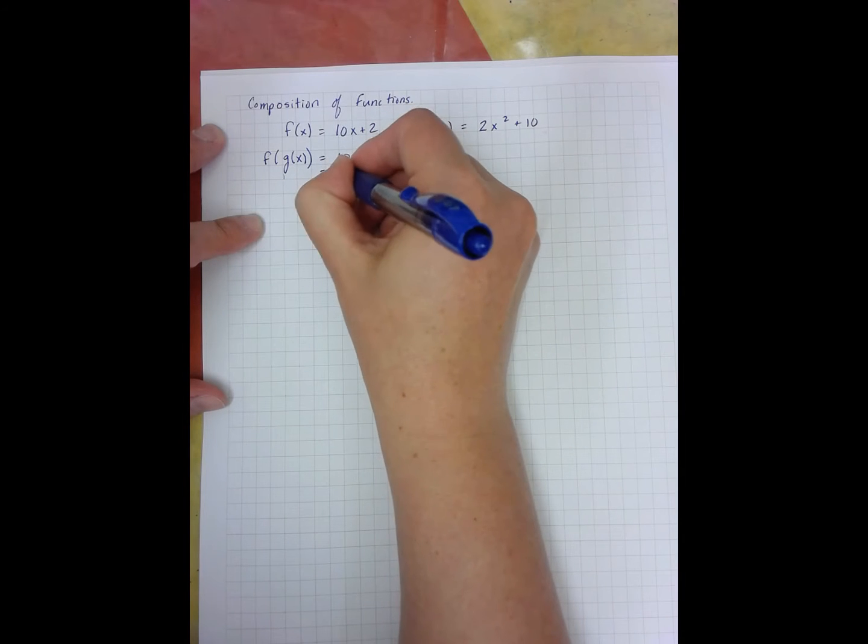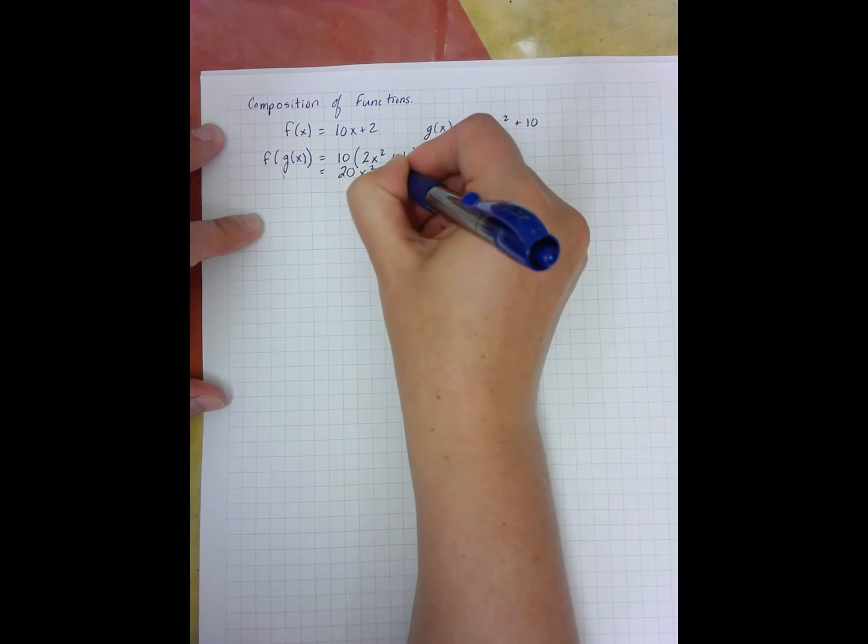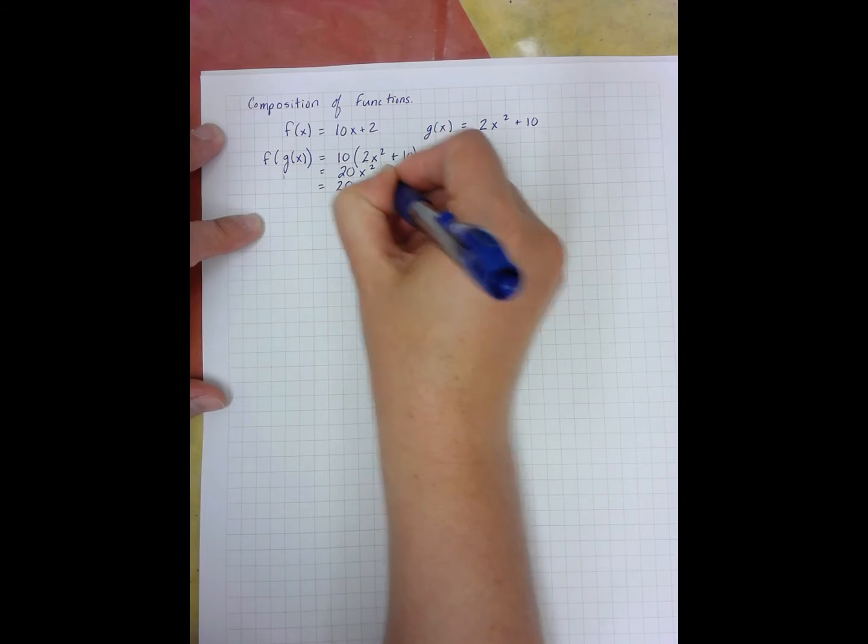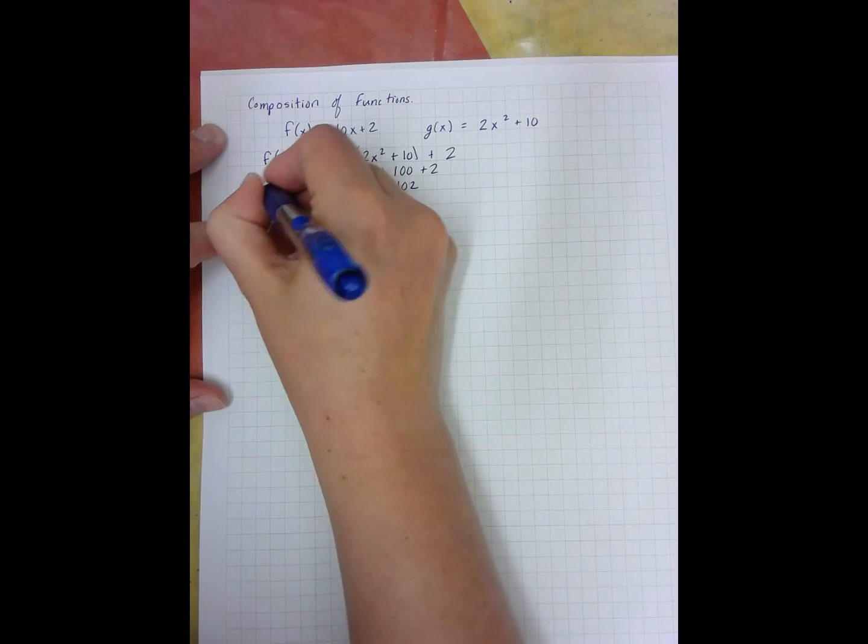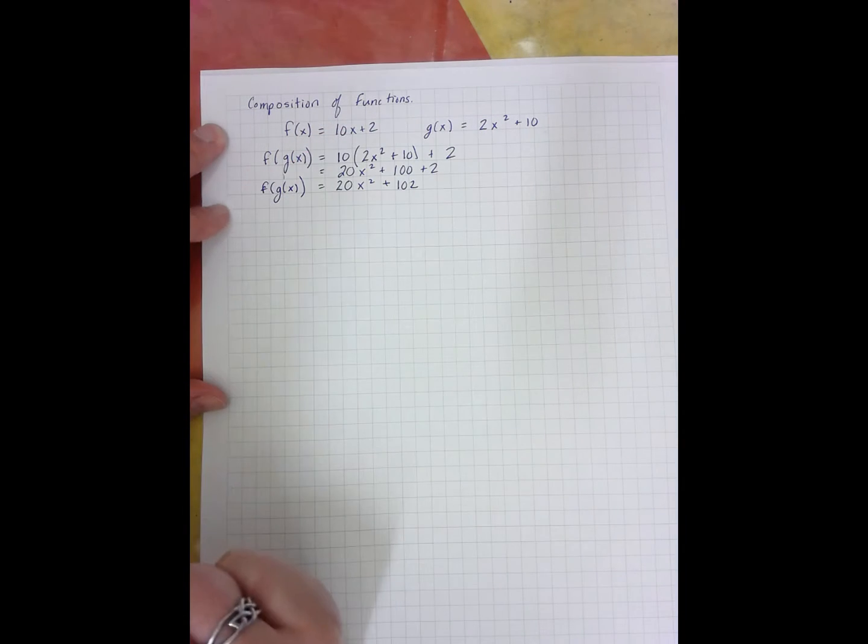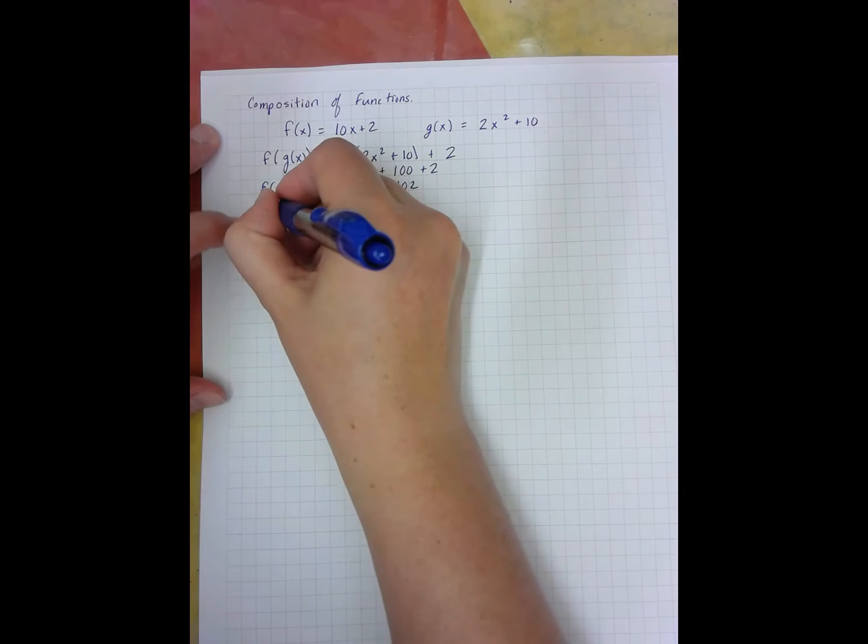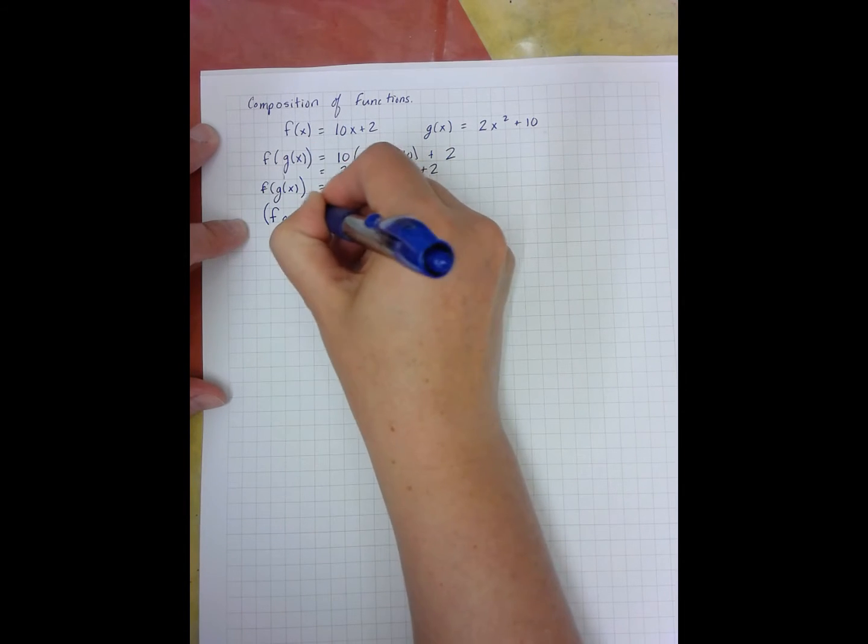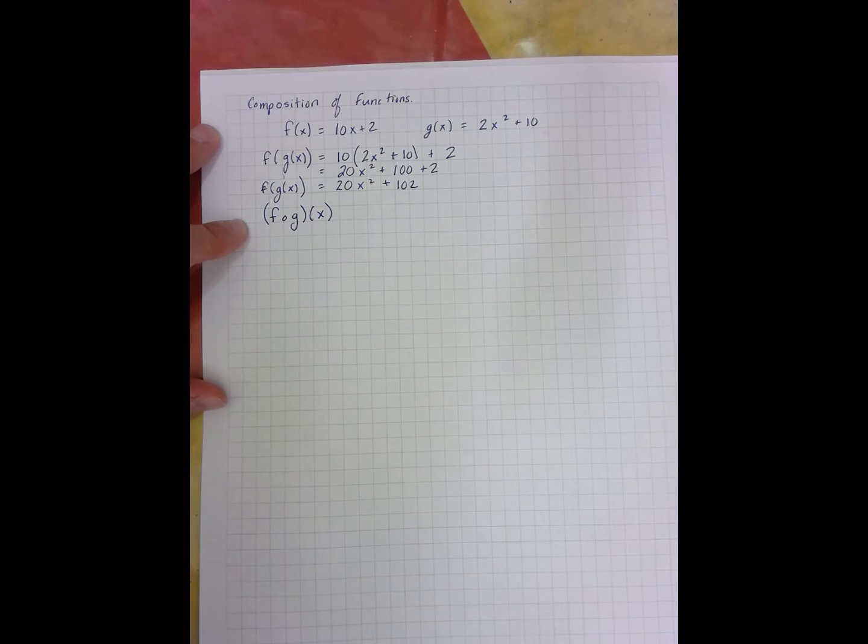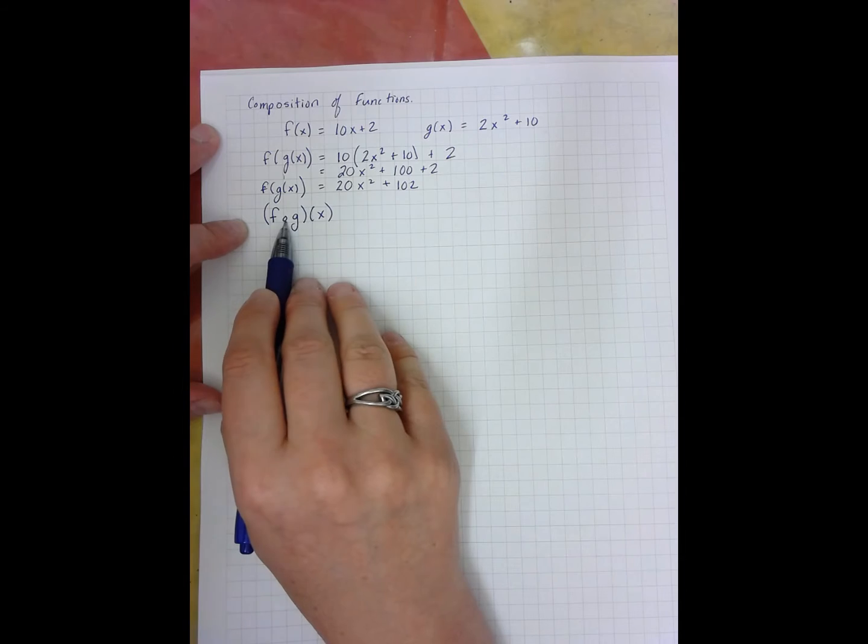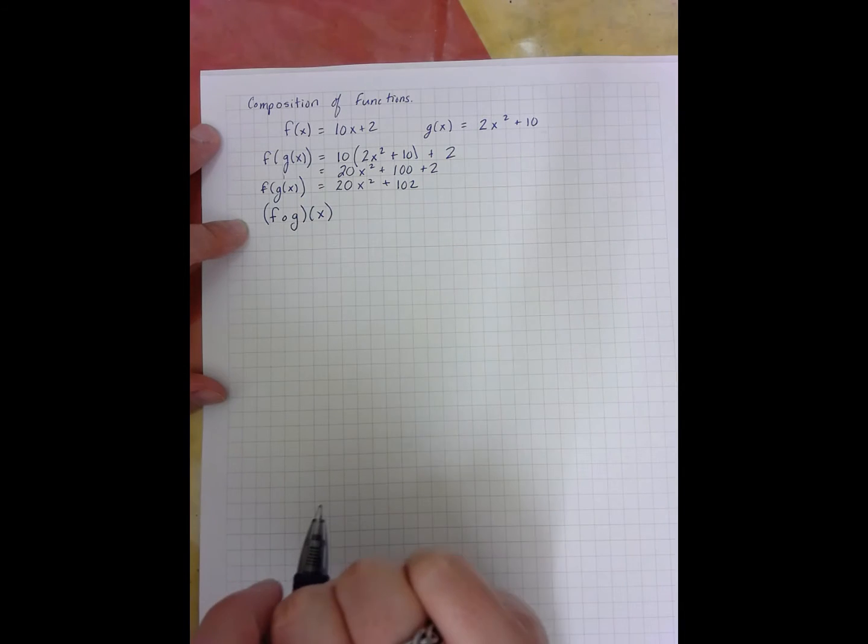I simplify this by distributing, combining like terms, and I have found f of g of x. I can also write f of g of x as what we often talk about as fog because it looks like fog, but this o here is actually a little tiny open circle.